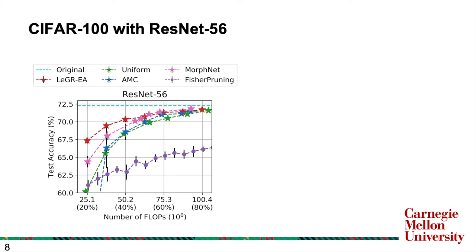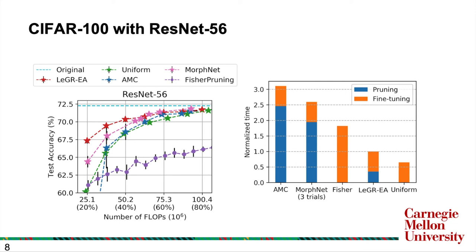Secondly, we analyze the time it takes to obtain the solution in the plot, which can be seen on the right. Our method, Ledger-EA, outperforms AMC and MorphNet drastically because they have to conduct a search for each of the target flops while Ledger only needs to learn the ranking once.